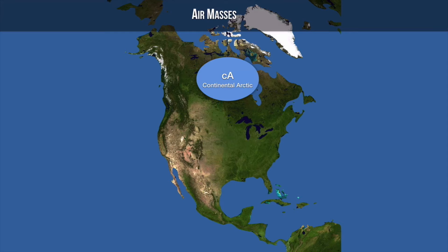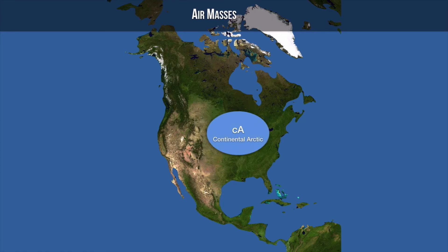Our next air mass is the continental arctic. This is not over the ocean — this is over land. Continental means dry air, air that doesn't have a lot of moisture. Arctic, as it suggests, is very, very cold air. This is very cold, very dry air that forms over central Canada and gets pushed down our way. It's associated with the polar vortex. When it descends into our area, especially in the upper northern states, it brings really, really cold temperatures.